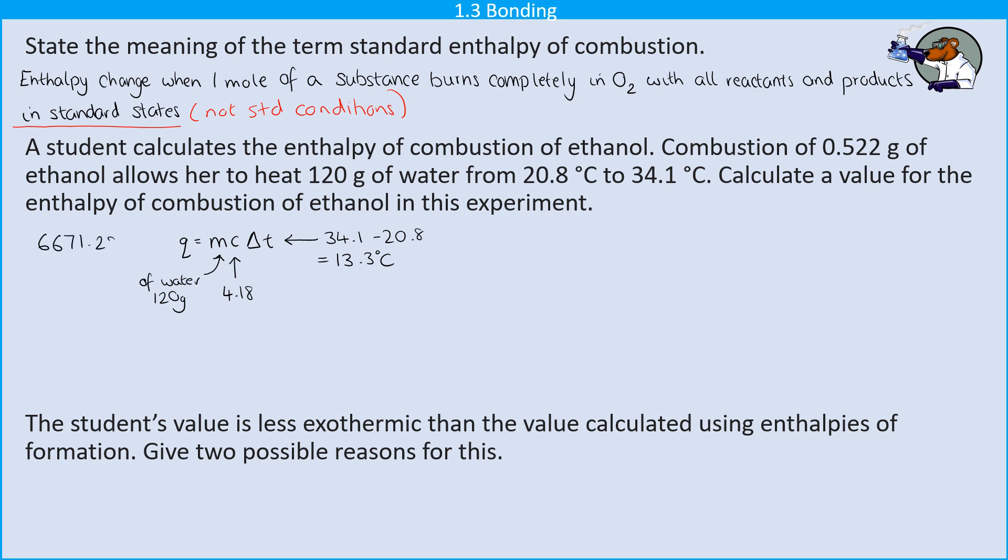So once I know all of that, I can work out a value for Q, which is going to be 6,671.28 joules. I am not going to round that value. Remember, we're never going to round until we get to our final answer. So that's my value for the energy change, the amount of energy that has been absorbed by the water in this process.